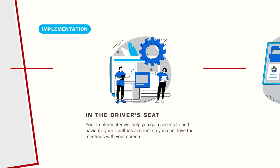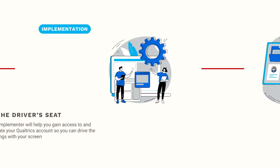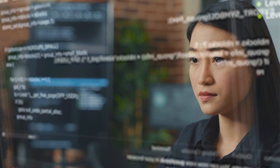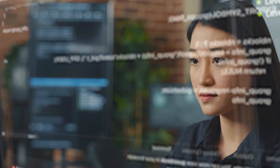That way, in the working sessions, either you or your implementer can drive on the screen as we work together. Please keep in mind that Red Pepper will be working exclusively in your Qualtrics account and not on any code or configurations from your organization's internal systems. On a standard implementation engagement, we don't have access or authorization to do so — this is where you will need your IT team or other internal admins to assist you.